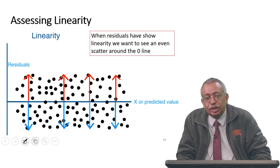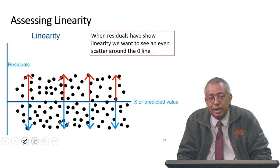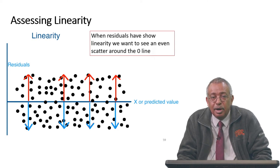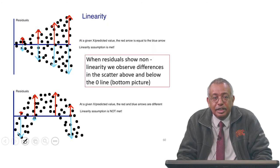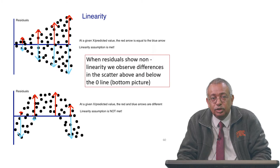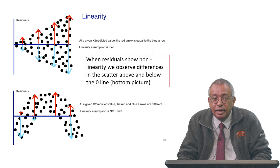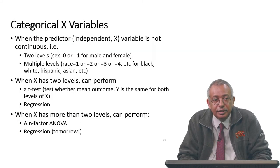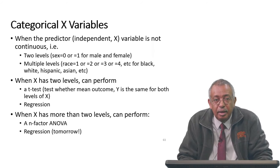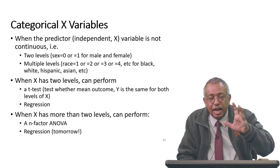For the linearity assumption, you also want an even scatter around the zero line — roughly equal spread of residuals above and below. If you see a parabolic or curved pattern in the residuals — more residuals on one side of the zero line in some regions and more on the other side in other regions — the linearity assumption is not satisfied. These are things you need to pay attention to in order to determine whether your model assumptions are satisfied.